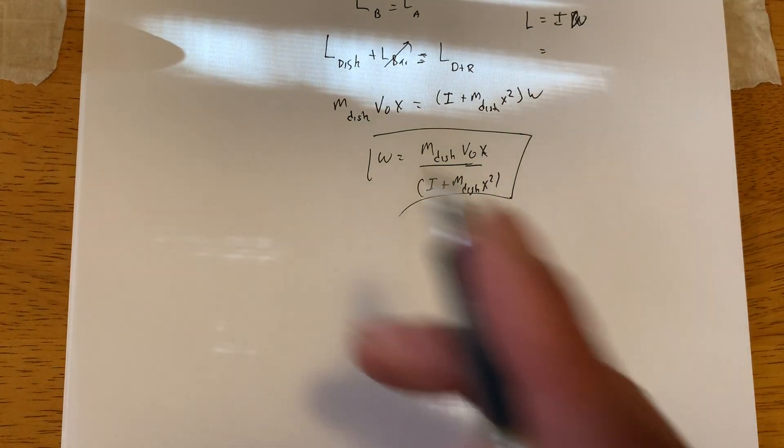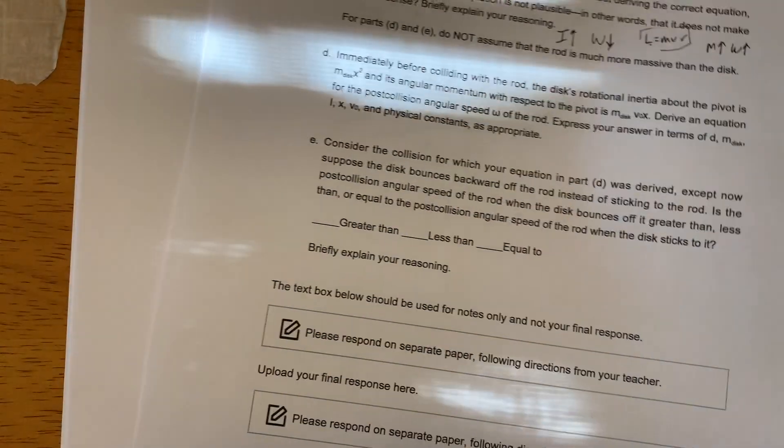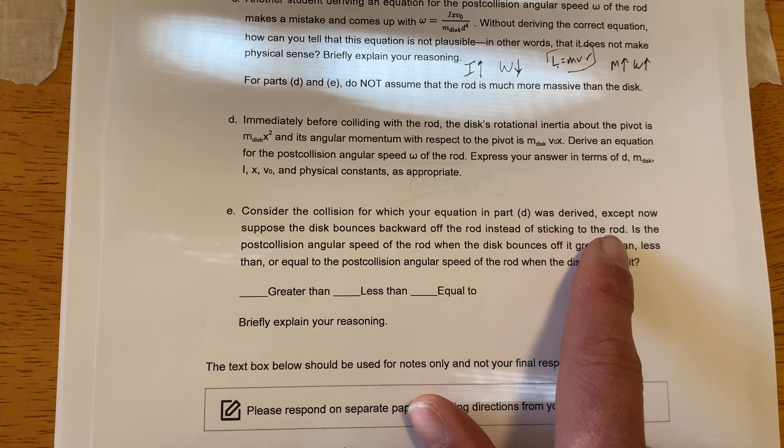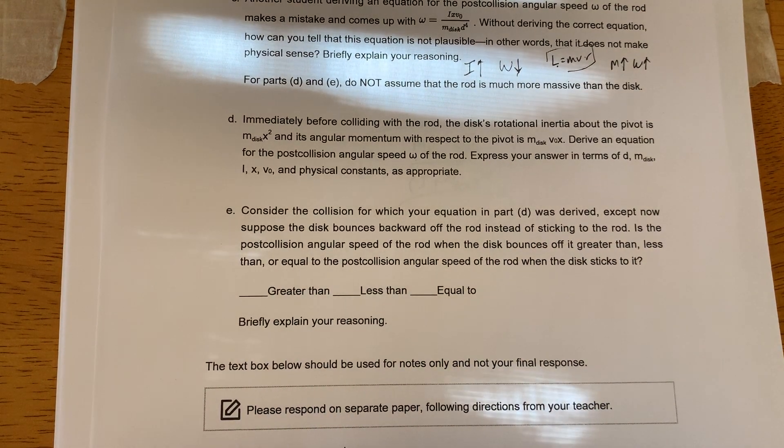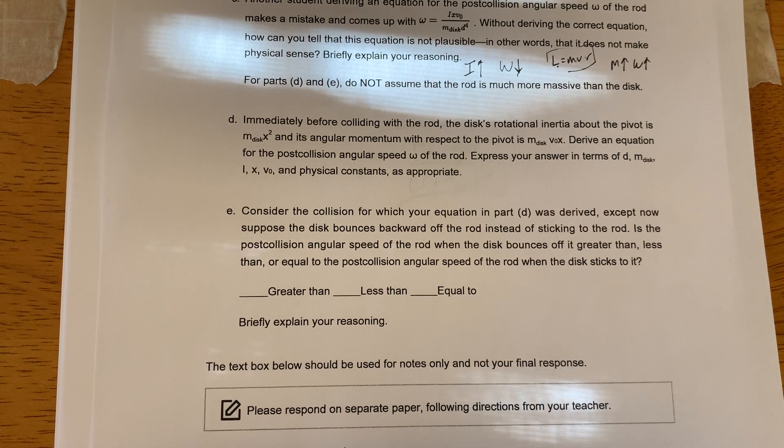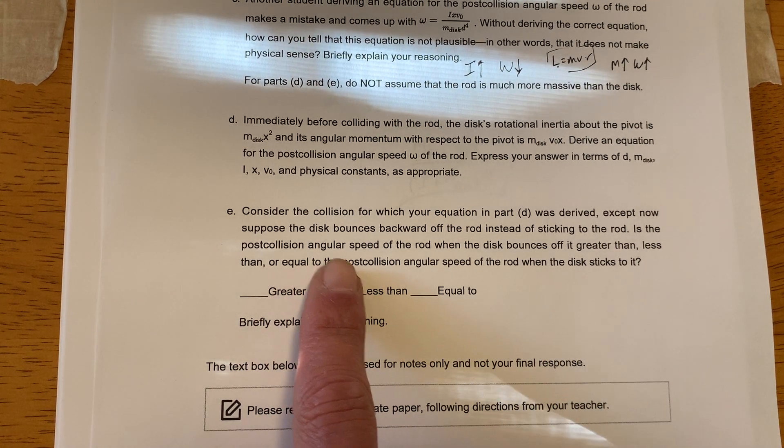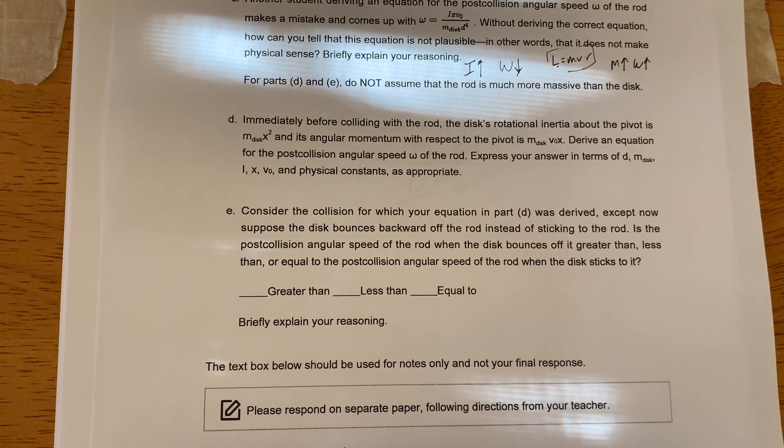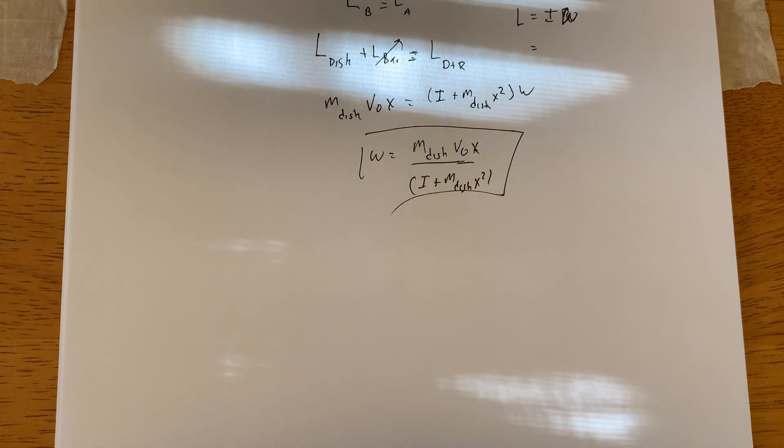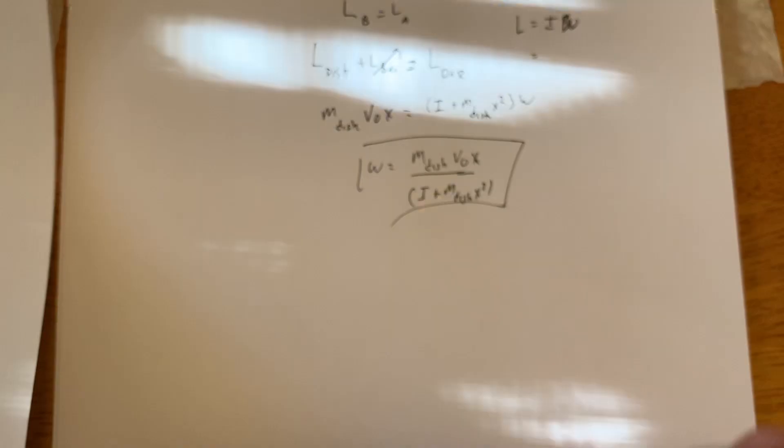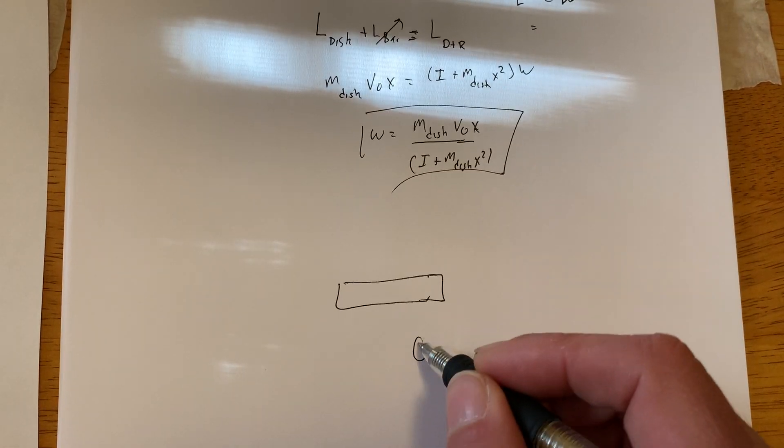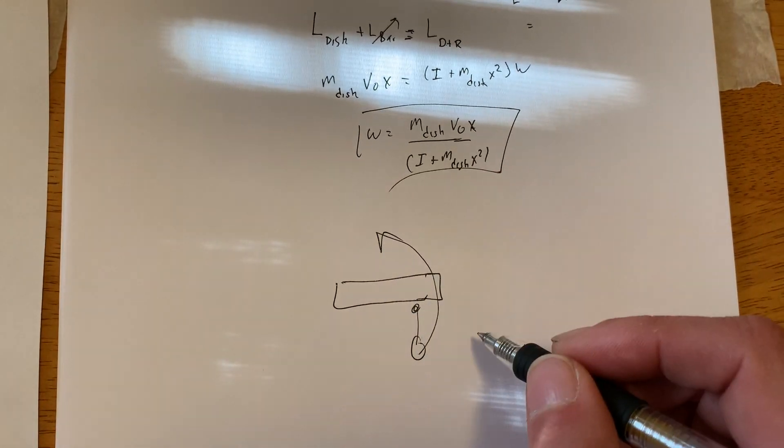What about E? Okay, so E says consider the collision for which your equation in part D was derived, except now suppose that this bounces backward. We bounce back. Is the post-collision angular speed of the rod when the disk bounces back greater than, less than, or equal to? Well, what does it have to be? Well look, in case one, I'm going to get this disk to stick to it and we're going to start to rotate.